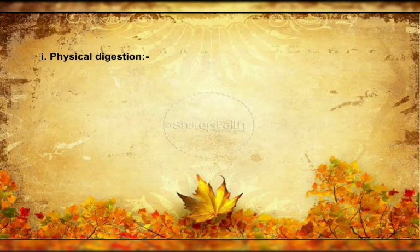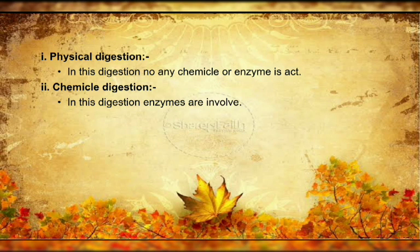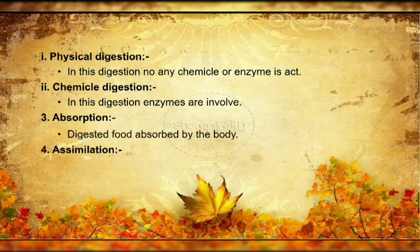In physical digestion, not even a single chemical or enzyme takes place. For example, when we eat something, our teeth cut the big particle into smaller pieces — no chemical or enzyme is involved, so that is physical digestion. Chemical digestion involves all the chemicals such as enzymes. Next is absorption — digested food is absorbed by your body or cells. Then assimilation — the cell or body takes nutrition from the absorbed food. Last is egestion — removal of waste material from the body.